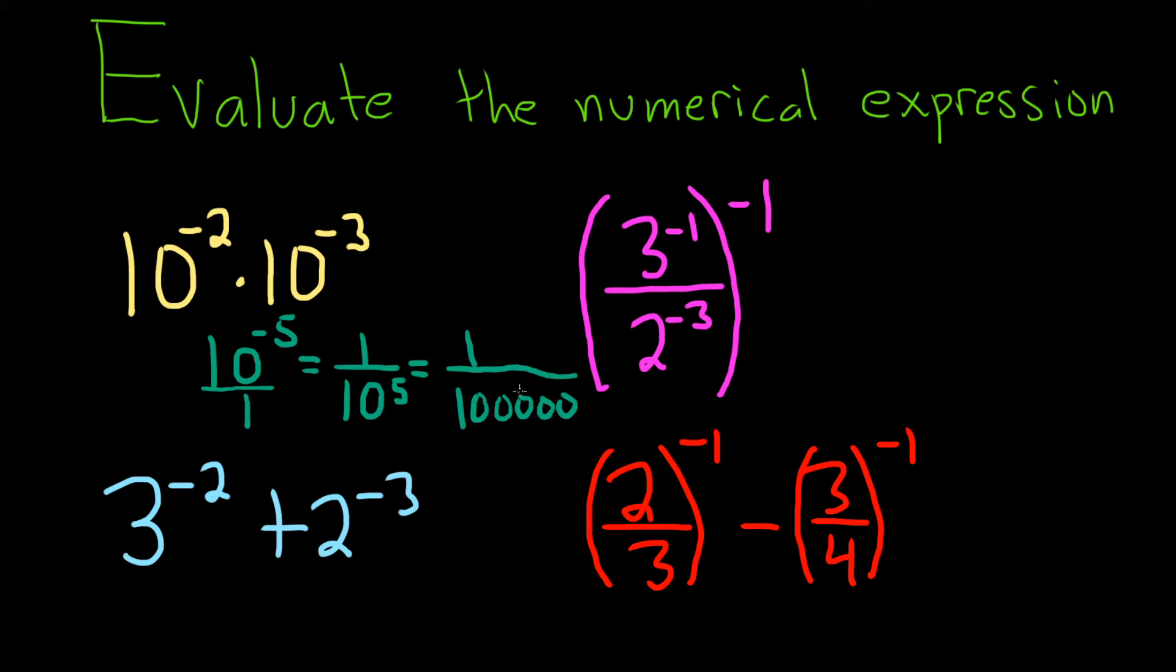That always works. If you had 10 to the 7, it'd be 1 and 7 zeros. If you have 10 squared, that's 100, so it's 1 and 2 zeros. 10 cubed is 1,000, that's 1 and 3 zeros. So you can always do that with 10s.